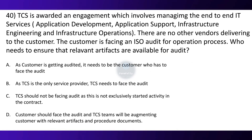Question 40. TCS is awarded an engagement which involves managing end-to-end IT services — application development, application support, infrastructure engineering, and infrastructure operations — with no other vendors delivering to the customer. The customer is facing an ISO audit for operation processes. Who needs to ensure that relevant artifacts are available for audit? Option A: As the customer is getting audited, it needs to be the customer who faces the audit. Option B: As TCS is the only service provider, TCS needs to face the audit. Option C: TCS should not be facing the audit as this is not explicitly stated in the contract. Option D: The customer should face the audit and TCS will augment the customer with relevant artifacts and procedure documents. The correct option is B.